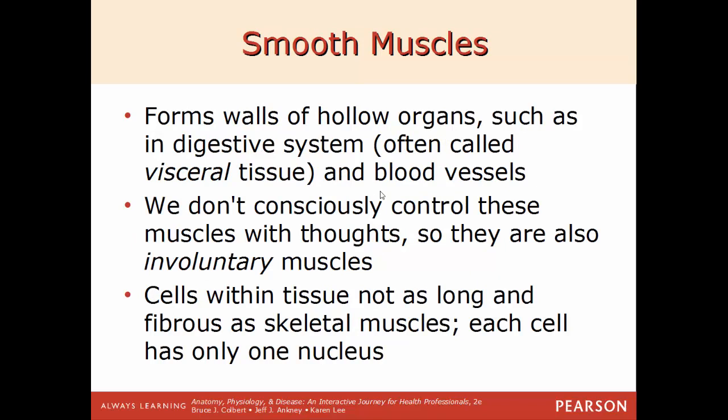The last of the three is smooth muscle. This forms the walls of hollow organs such as the digestive system and blood vessels. Like cardiac, you have no control over smooth muscle — it's involuntary. Cells within smooth muscle are long but not as long as skeletal tissue, and they only have one nucleus. Their shape bulges out in the middle and tapers off on the ends — called a fusiform shape — long but not long and slender like a tube.